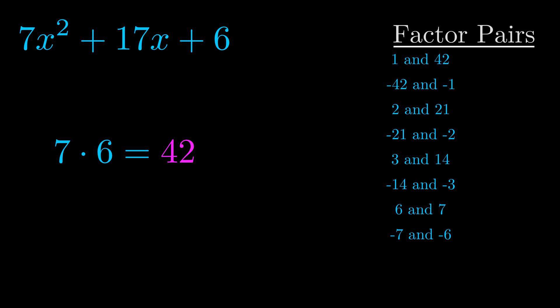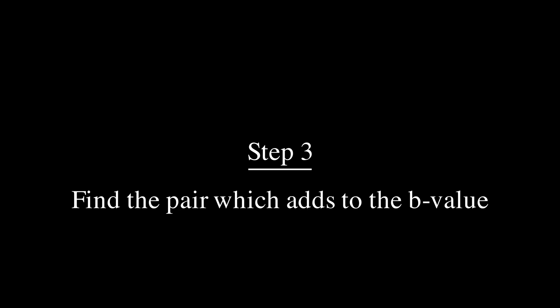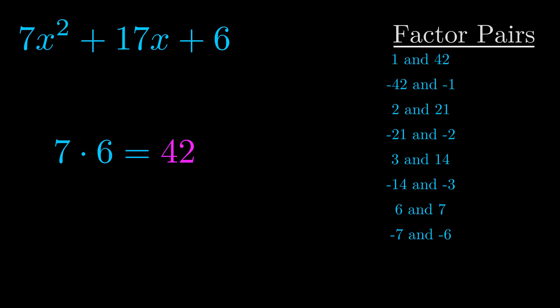Now once you have these factor pairs the goal is to find which of these pairs adds to the b value. The b value is the coefficient on the x term. That's the middle term, the one that we haven't done anything with yet. And really this is the only factor pair that we need.